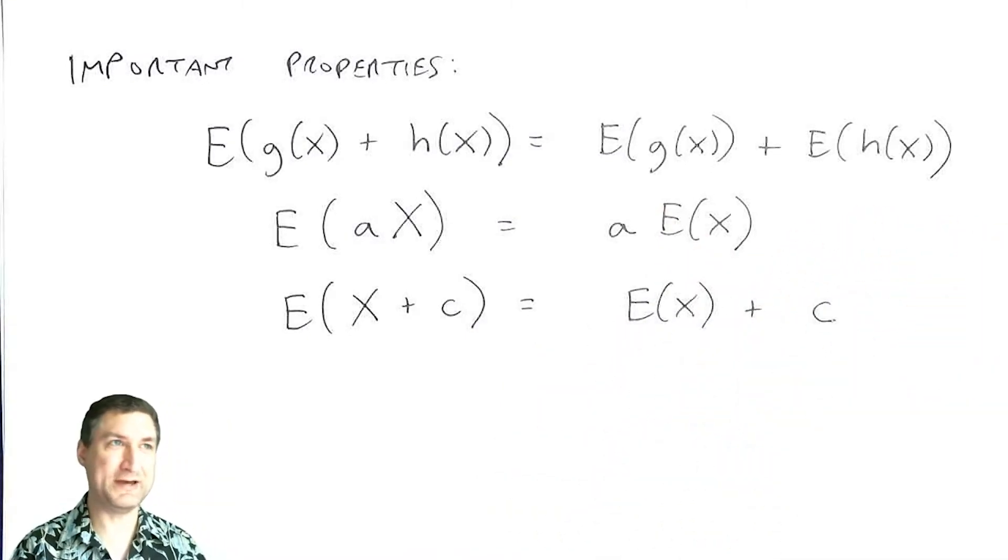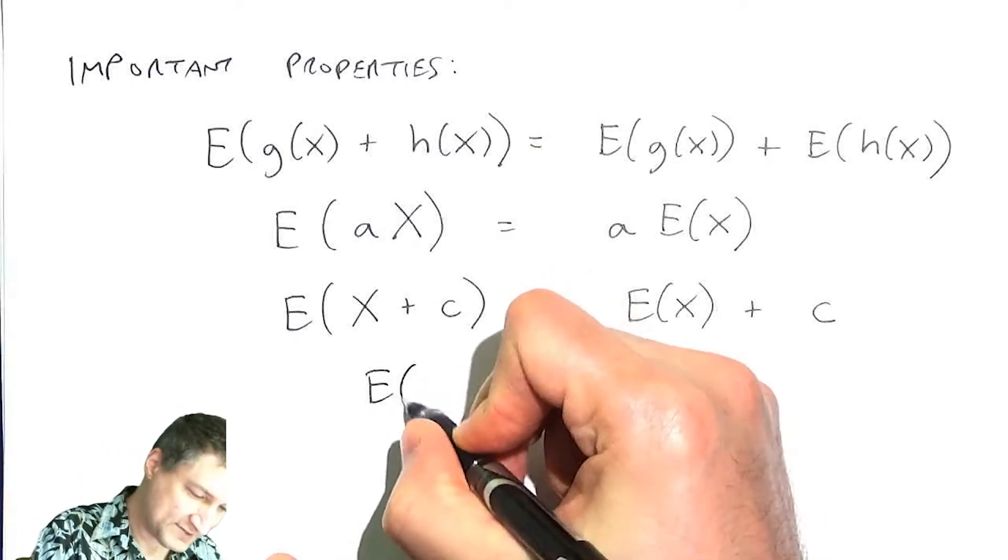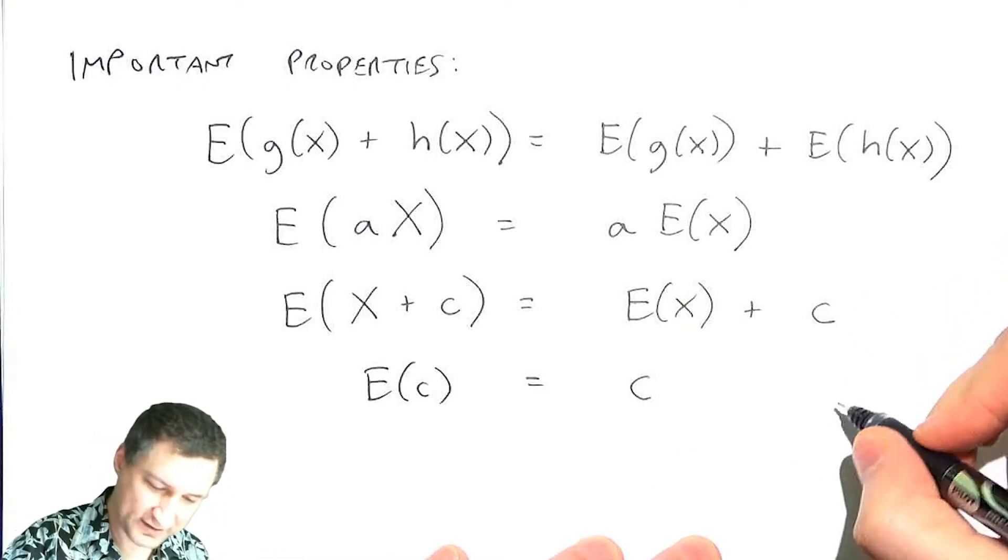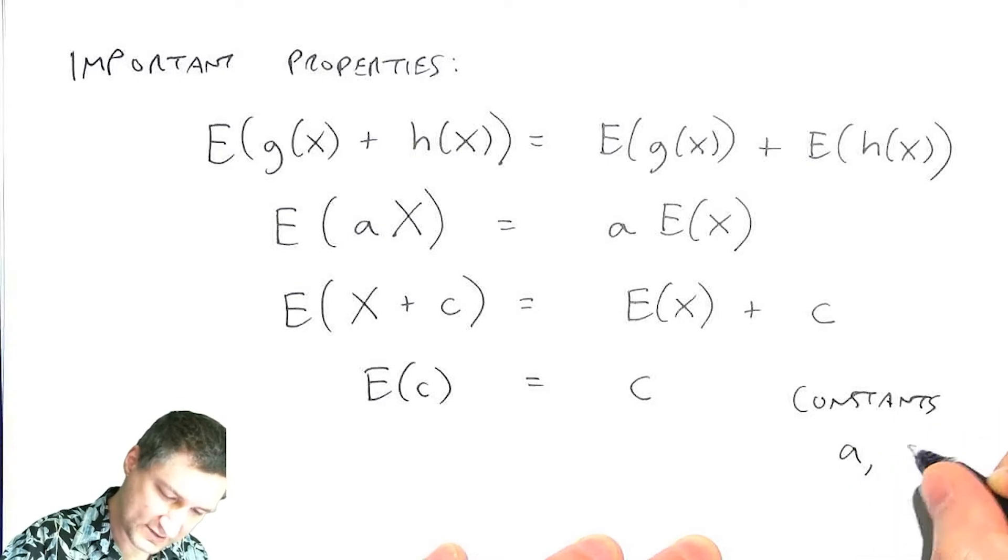And if I have something like the expected value of x plus some constant number, then that's just the expected value of x plus the constant. You can think about the constant in a way as like a random variable that has no uncertainty. It's just a PMF that has a spike at the value that you can get at C. A different way of saying that is the expected value of a constant is just a constant. So here for constants A and C.